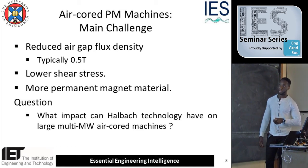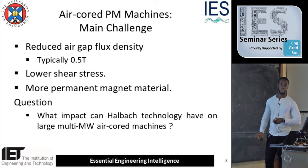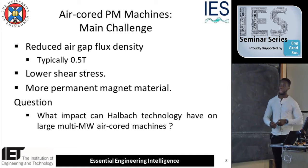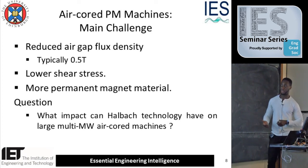You also have lower shear stress, which compares your magnetic loading to your electrical loading. Then there is more permanent magnet material required — permanent magnets cost money and they also weigh a lot. So if you have more permanent magnets, the forces in these machines become quite difficult to deal with, especially as you go up in megawatts. One question I want the Halbach technology to hopefully answer is: how well can it improve on these factors, especially when you go up to multi-megawatts of an air-cored permanent magnet machine?